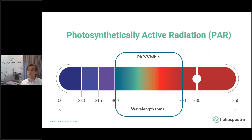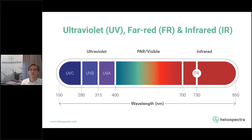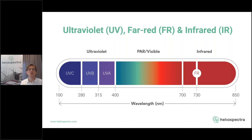This is the light plants use for photosynthesis, but it's not the only important light for plants. As you can see in this figure, there is something to the left and something to the right that also matters. To the left we have ultraviolet or UV radiation — light with wavelengths below 400 nanometers — divided into UVA, UVB, and UVC. Even though UV is not directly used in photosynthesis and is not part of PAR, it's still important to plants. They use it as a signal for how to grow and what types of compounds to produce.